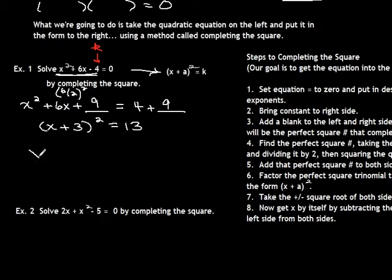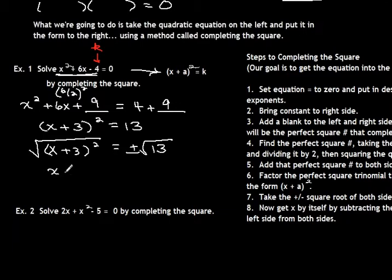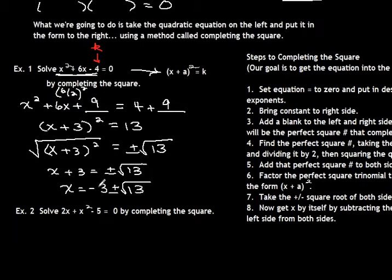I'm going to take the square root of x plus 3 quantity squared. Don't forget you have to do the plus or minus square root of 13. We get x plus 3 equals plus or minus the square root of 13. If we subtract 3 from both sides, we get x equals negative 3 plus or minus the square root of 13. We put the constant value first and then the square root — the non-irrational number first.